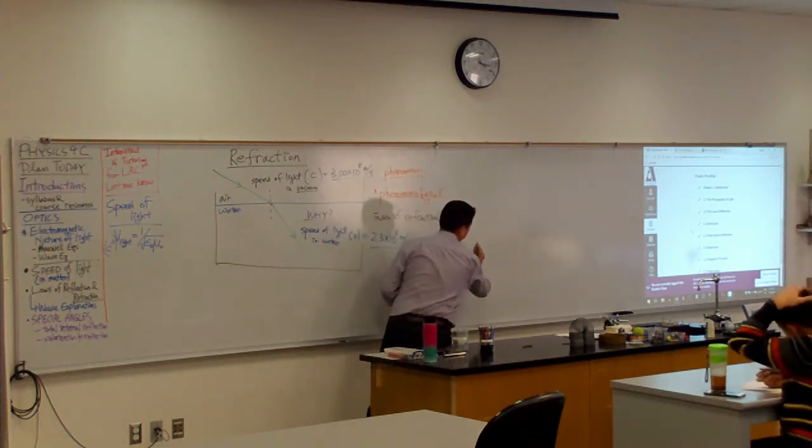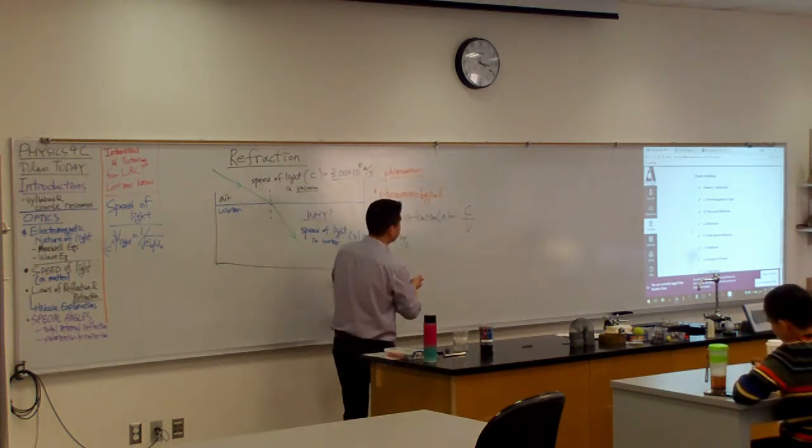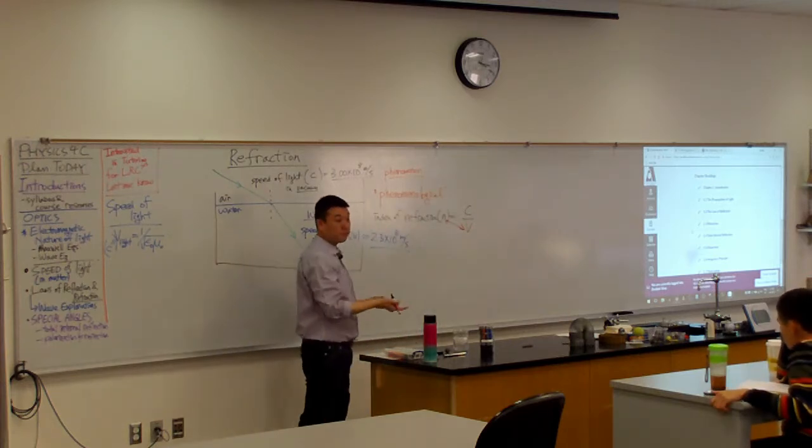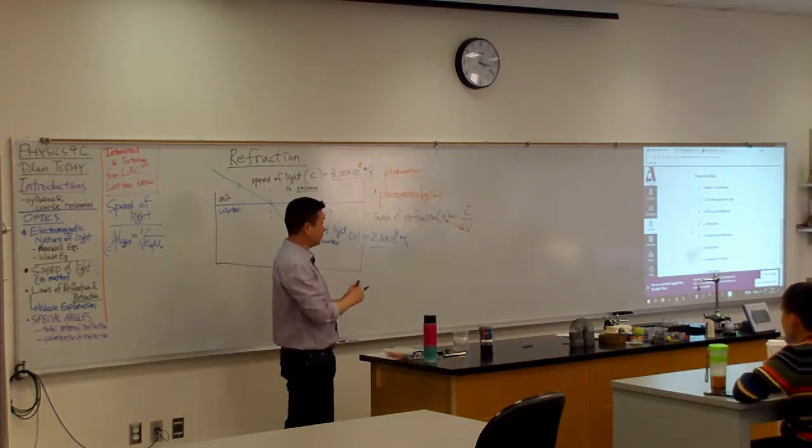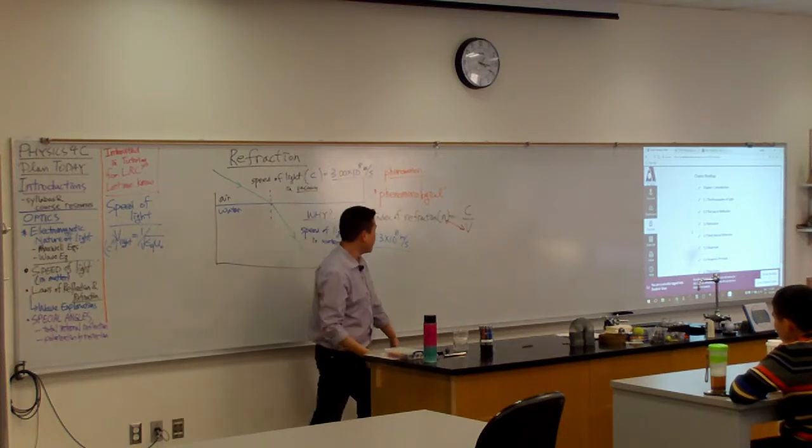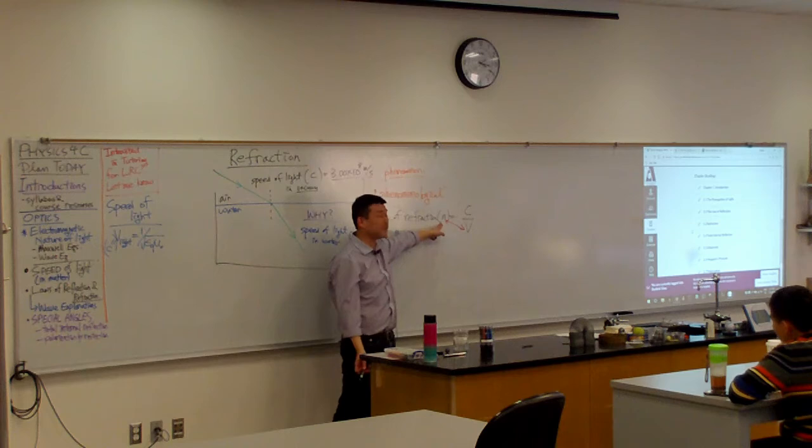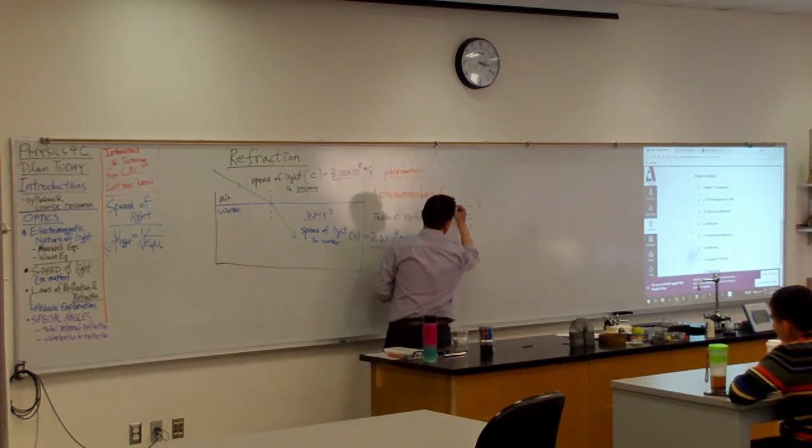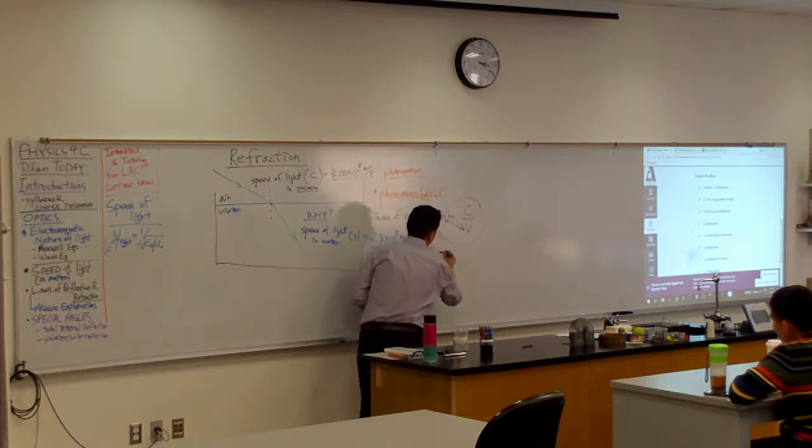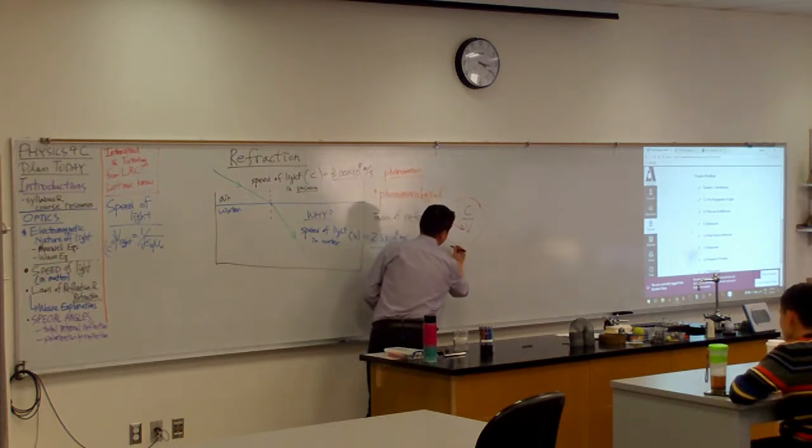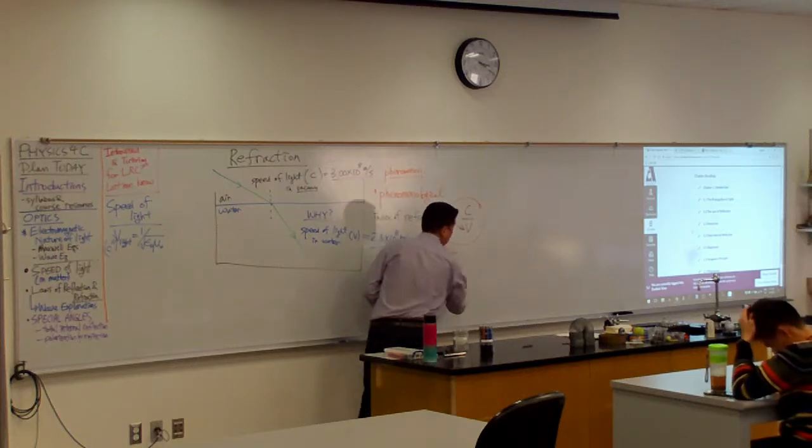These two quantities are the ones that go together. This V is some kind of property of the medium, speed of light in the medium, and this index of refraction is essentially a way of expressing the exact same information. You could say the speed of light in a medium is speed of light in vacuum divided by index of refraction.